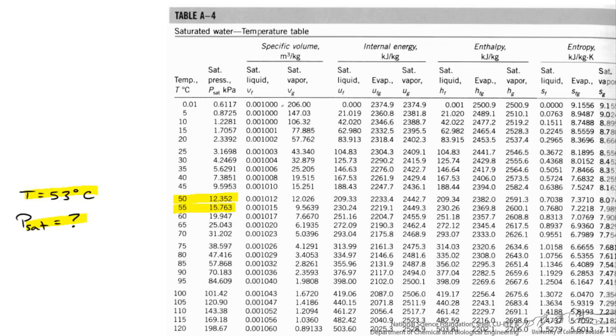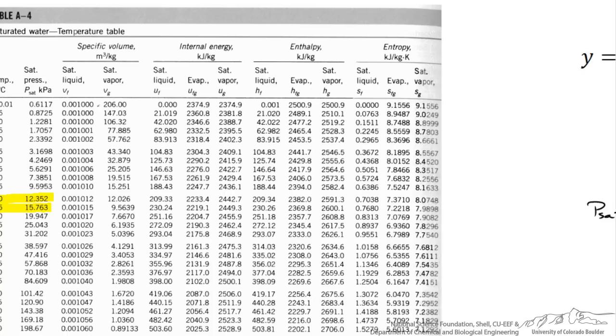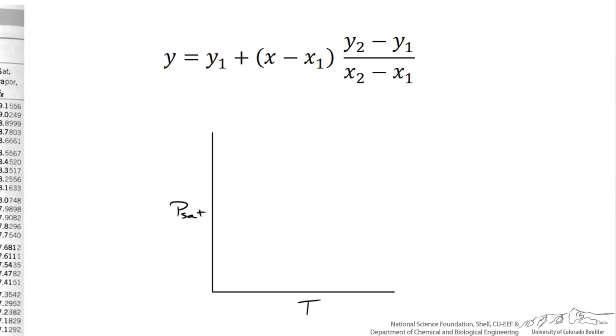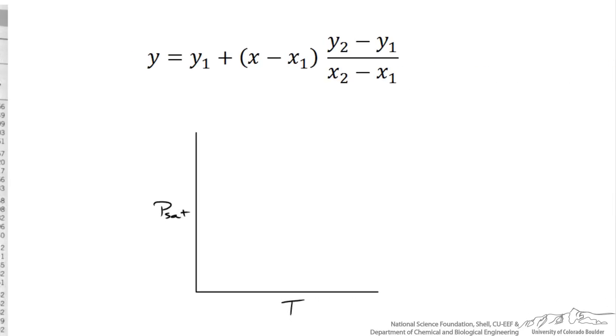So one thing we can do is linearly interpolate between those two values. And what I mean by linearly interpolate, here we are at 50 degrees C there is some saturation pressure and at 55 degrees C there is some other saturation pressure. In this case the pressure is a little bit higher. And let's draw a line between the two.